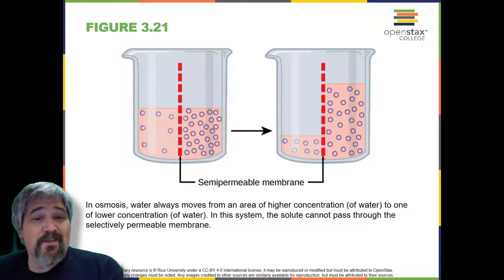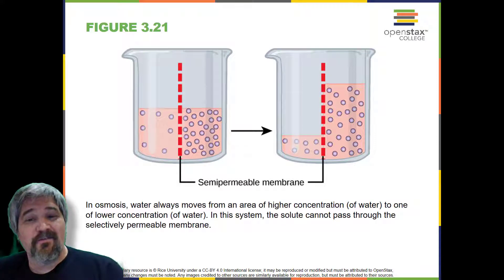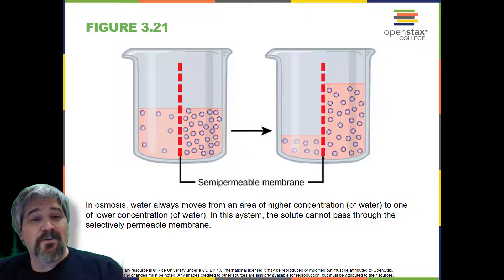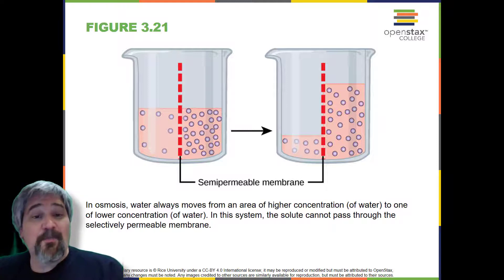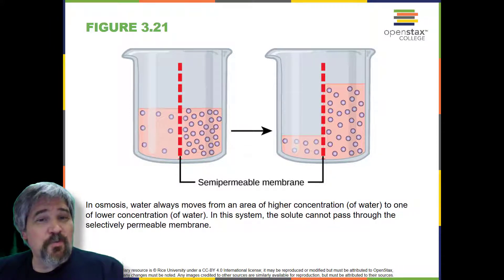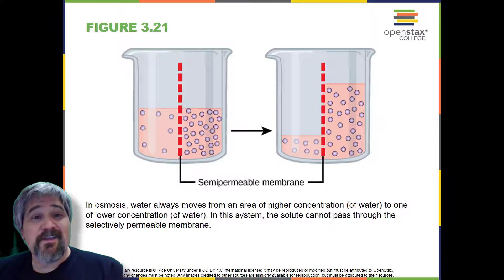On both sides of the membrane, the water level is the same, but there are different concentrations on each side of a dissolved substance or solute that cannot cross the membrane. If the volume of water is the same but the concentrations of solute are different, then there are also different concentrations of water, the solvent, on either side of the membrane. A principle of diffusion is that the molecules move around and will spread evenly throughout the medium if they can. However, only the material capable of getting through the membrane will diffuse through it. In this example, the solute cannot diffuse through the membrane, but the water can.